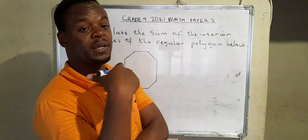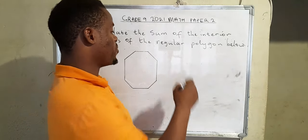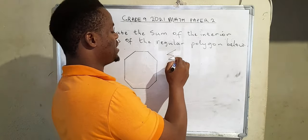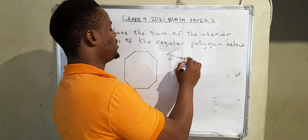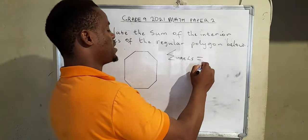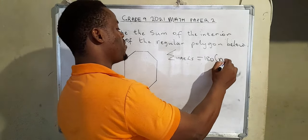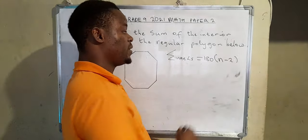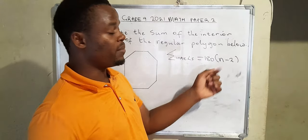What you need to do is simply employ the formula. Sum of the interior angles is given by 180 times number of sides minus two, so n denotes the number of sides of the given polygon.